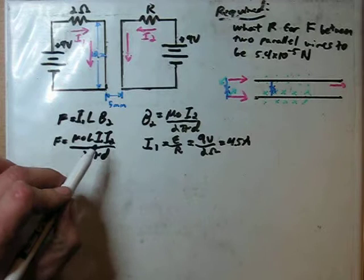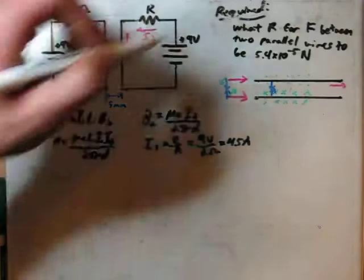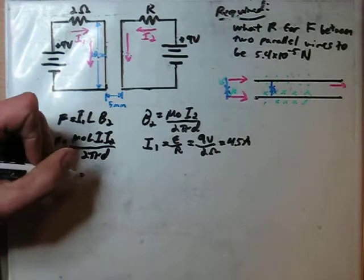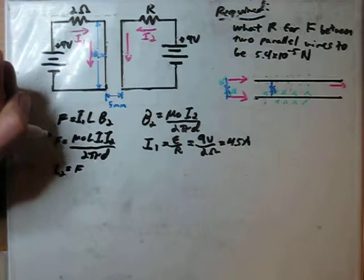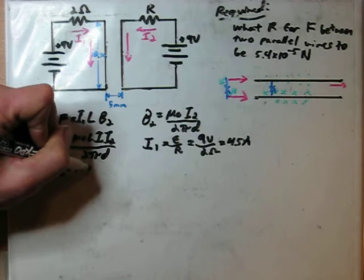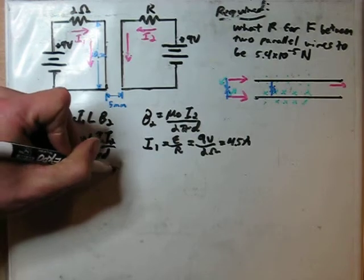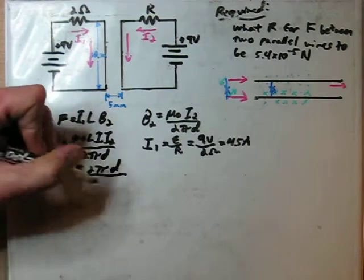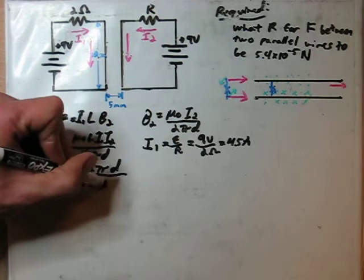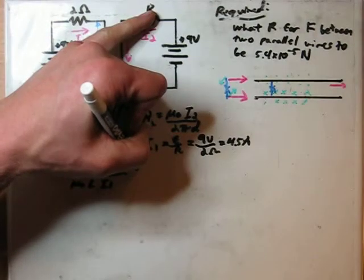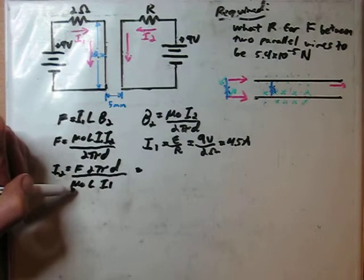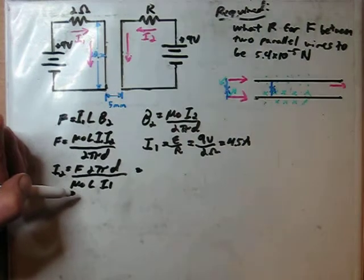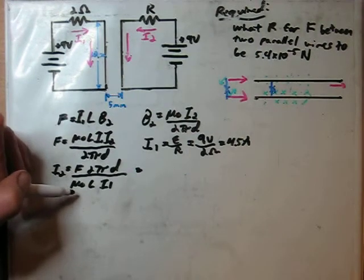So the only thing we don't know in this equation is I2, and from I2 we can figure out what we want to use for that resistor. So let's go ahead and rearrange the problem. You could solve for I2, and you have I2 equals the force which we know we want, force 2 pi D over mu naught L I1. And then if we throw in what we know, everything here gets filled out. And don't forget that mu naught is 4 pi times 10 to the negative 7th. So the pi cancels, and you actually are just left with a 2 in the bottom.